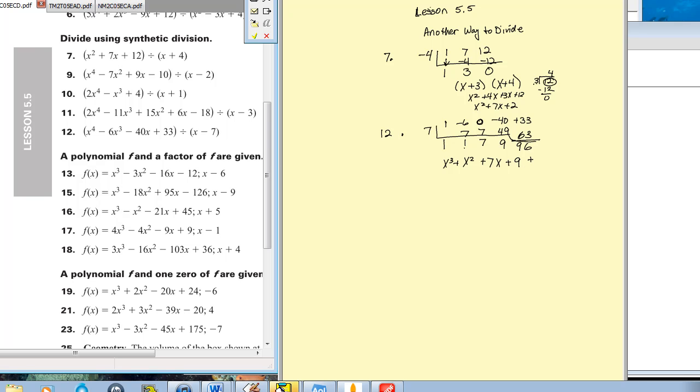With a remainder now. I'm going to go ahead and put plus because there's plus there. Remainder of 96 over, and I'm going to put my original divisor over there. So I'm going to put x minus 7.